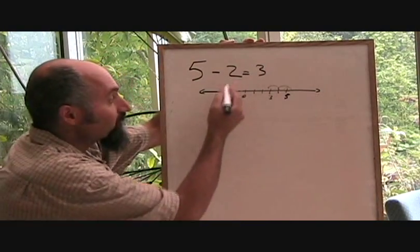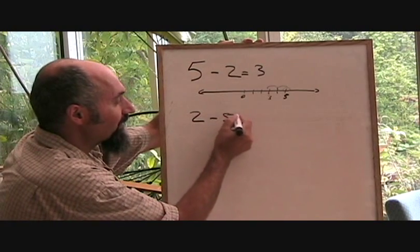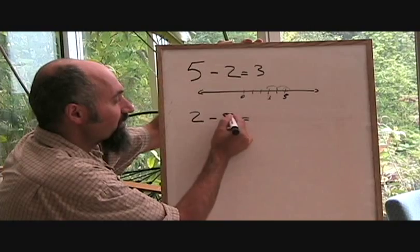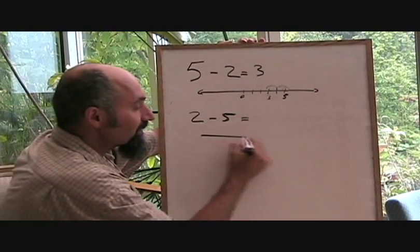Now let's try doing it backwards. So let's go 2 minus 5. Now for some reason, some people have problems with this. Now if you look at this as a number line, you start off at 2,